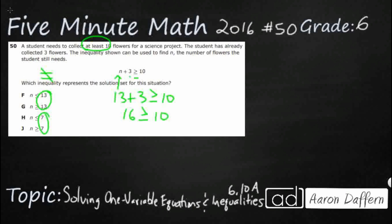That is true, but it's pretty far off. What if we try 7? Put 7 in for n — 7 plus 3 makes 10. That's a little bit closer because it at least gets you to equals 10. This 16 gets you greater than 10, but it's not equal to 10. So I'm thinking 7 is going to be a little bit better, but I've got two different 7s to choose from: less than 7 or greater than 7.